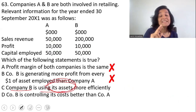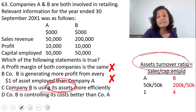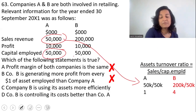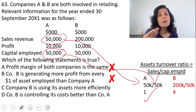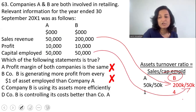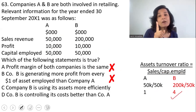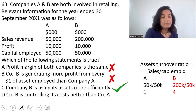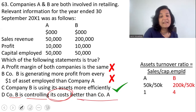Option C: company B is using its assets more efficiently. Asset turnover ratio = sales ÷ capital employed. Company A: $50,000 ÷ $50,000 = 1 — for every dollar of capital employed, you generate $1 of sales. Company B: $200,000 ÷ $50,000 = 4 — for every dollar of capital employed, you generate $4 of sales. Company B is using its assets more efficiently, so option C is correct.